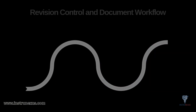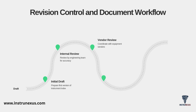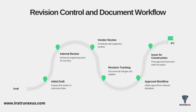Because so many disciplines depend on it, the instrument index must have a rigid revision control and document workflow. It follows a clear path: you start by preparing the initial draft of the index, which then goes for internal review where your engineering team checks it for accuracy. A crucial step is vendor review, where you coordinate with equipment vendors to confirm their data. Throughout this entire process, you must use revision tracking to document every single change. It then goes through a formal approval workflow to get sign-off from all relevant disciplines — only after all these steps is it finalized and given the Issued for Construction status.